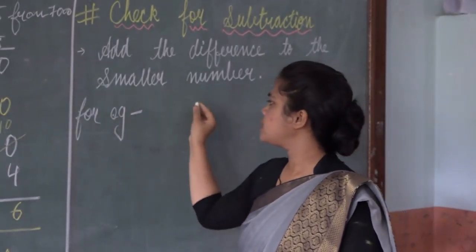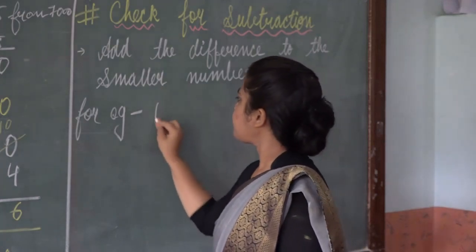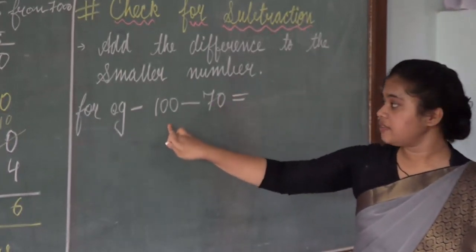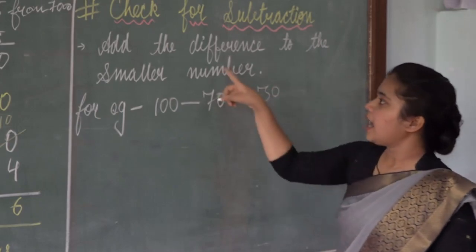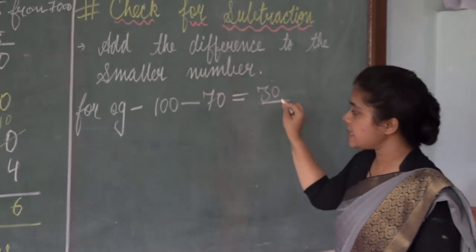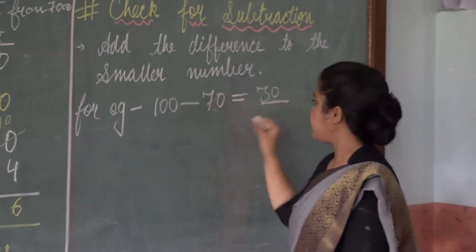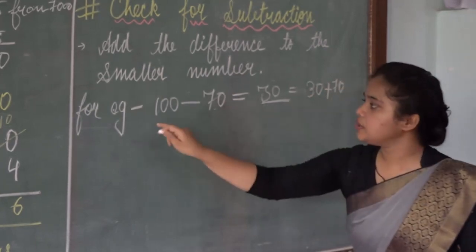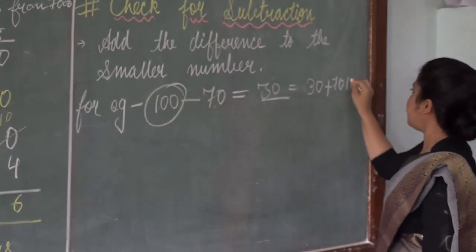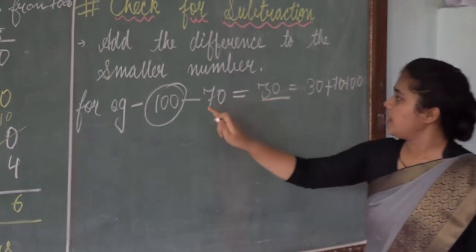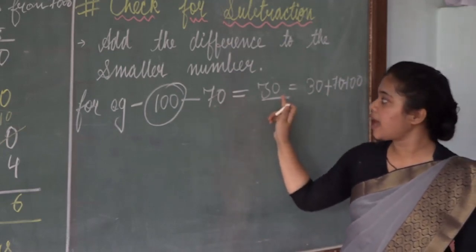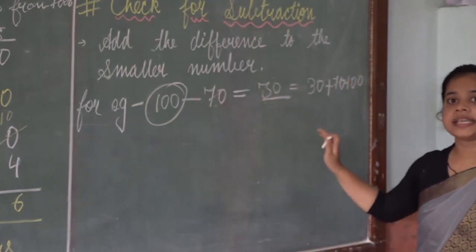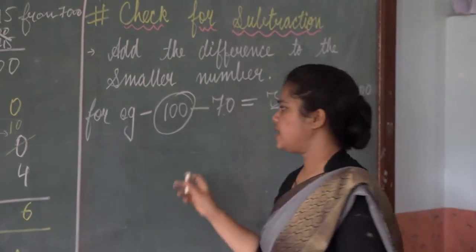Let us take an example. Suppose you subtract 100 minus 70. When you subtract 70 from 100 you get 30. Now add the difference to the smaller number: 30 plus 70. You should get the greater number, which is 100 here. So if you get the greater number when you add the smaller number and the difference, your solution is absolutely right.